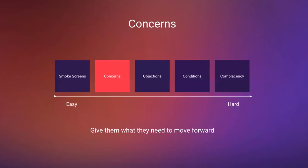Objection type number two on the spectrum is what we call concerns. A concern is an emotional hurdle that a buyer has when they are already sold on the idea, product, or proposal you're making — they just have a few final concerns you need to figure out. These are easy to overcome in terms of complexity. An example: the customer is concerned about a lengthy implementation process when you're closing a software deal.